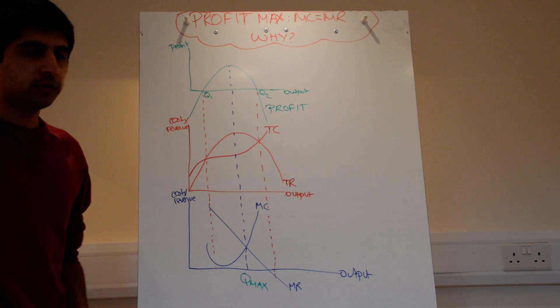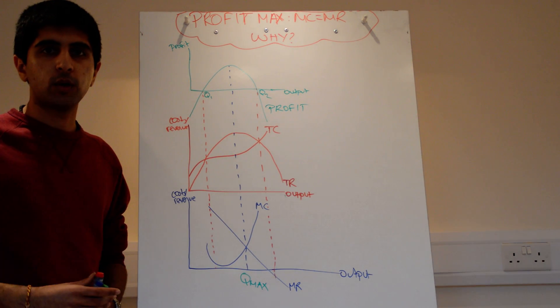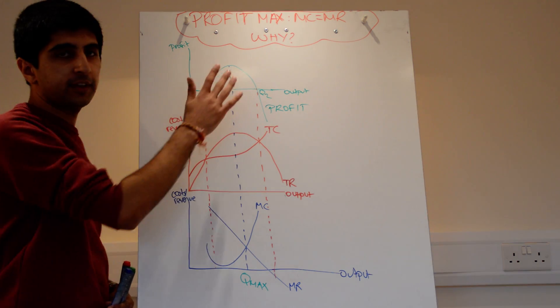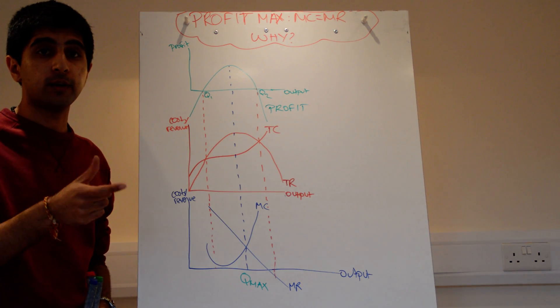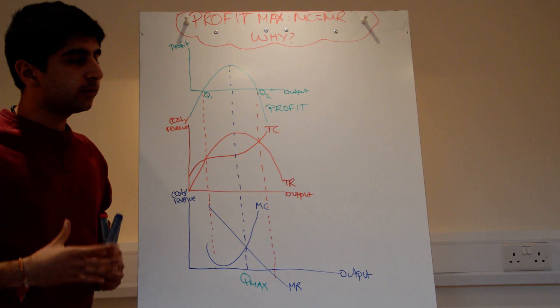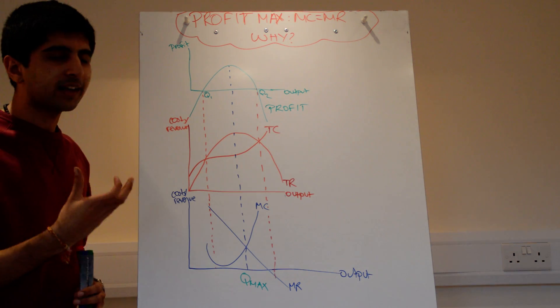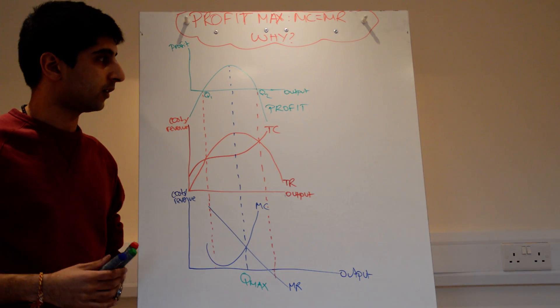Now, one fundamental law that we talk a lot about in economics is that profit maximisation occurs when marginal cost is equal to marginal revenue. We use it so much but often we don't actually explain why that occurs.